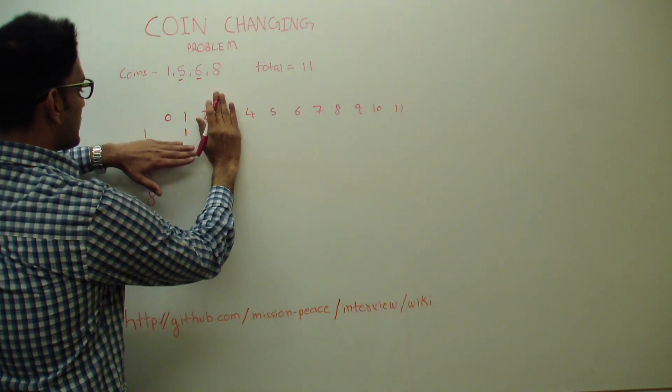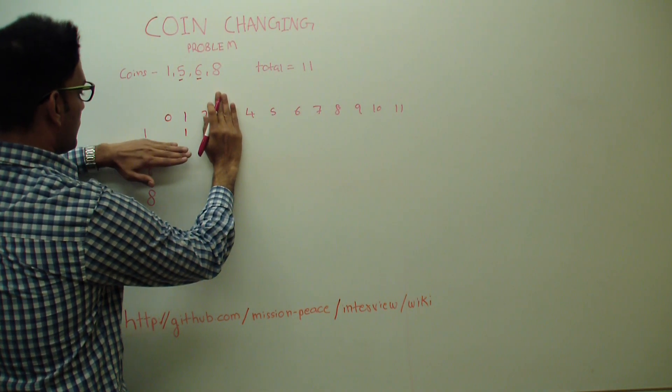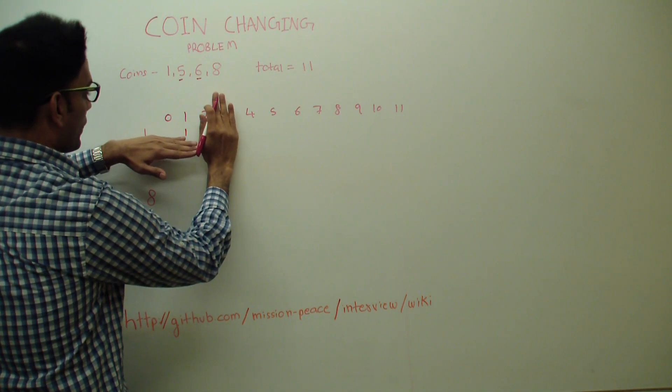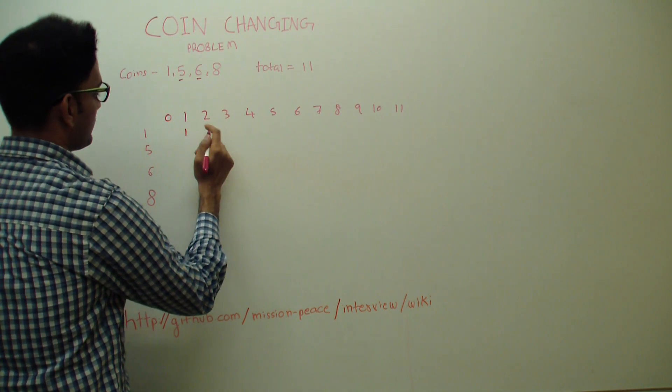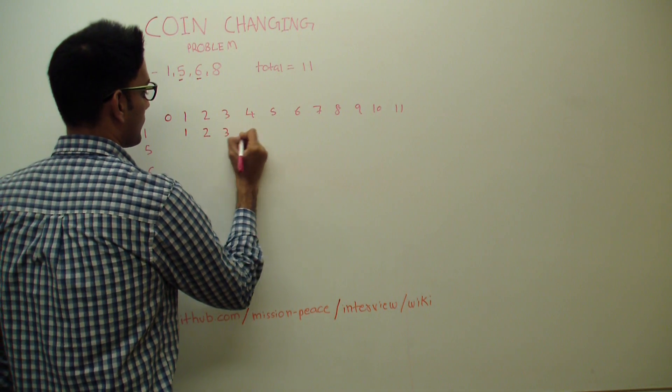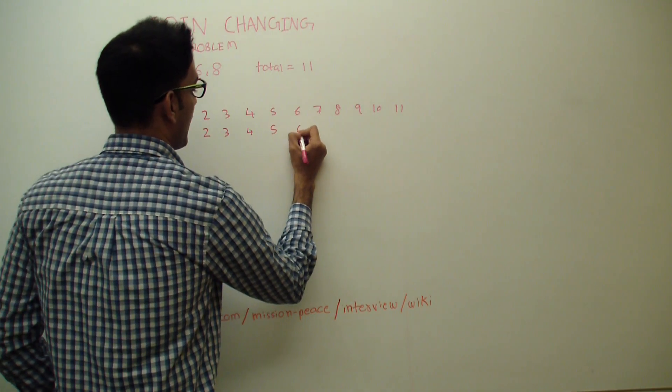Let's look at 2. If you just have 2 total and if you have just 1 to work with, how many coins would it take to get 2? So we'll say 2. Similarly, we can fill this first row in this manner.